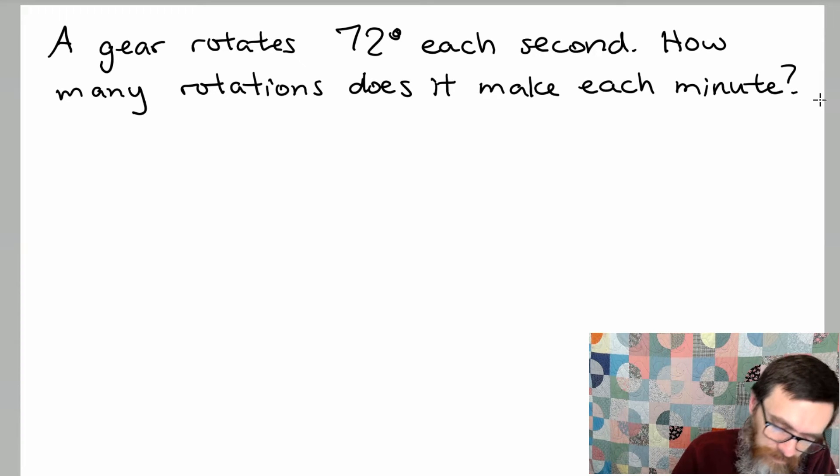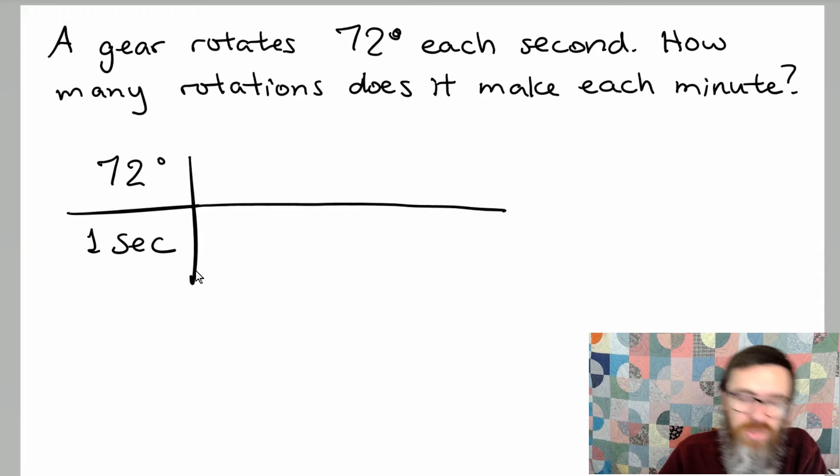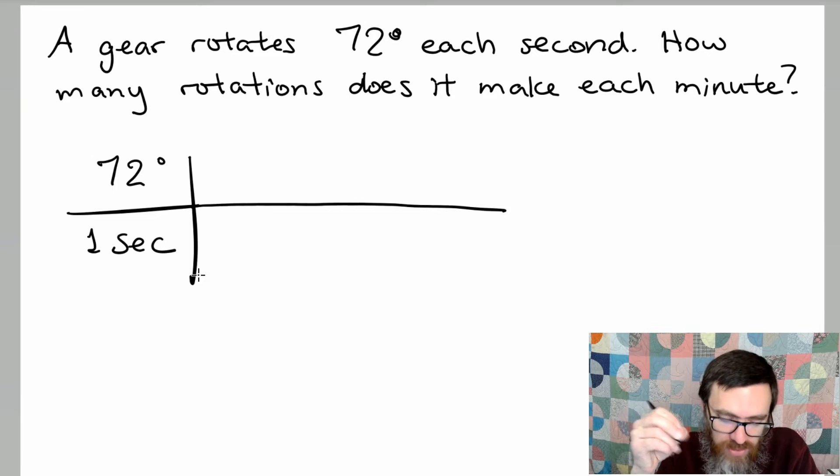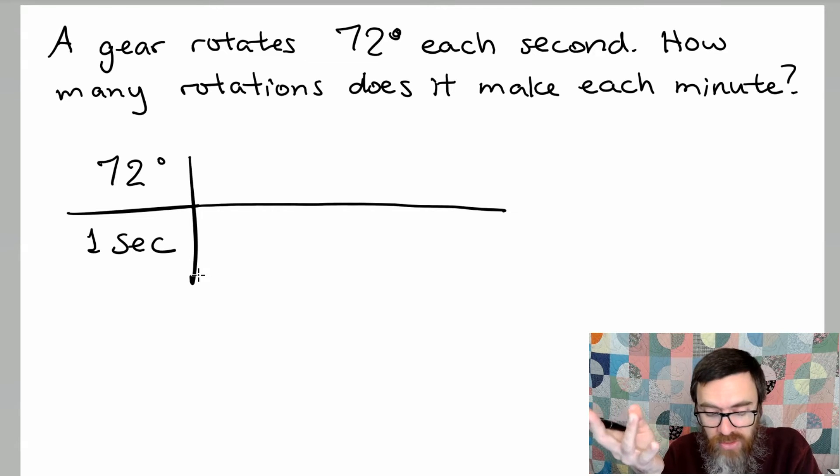For example, if we start with this one it makes 72 degrees for every second. So we just set it up like this and basically we're just going to be doing a bunch of multiplication using conversion rates. How many rotations does it make each minute? We need to convert seconds to minutes and the degrees to the rotations.